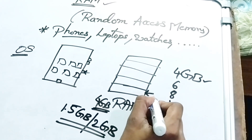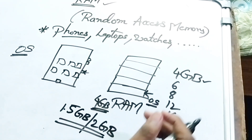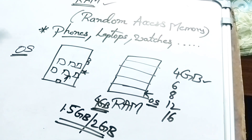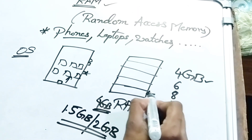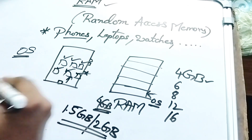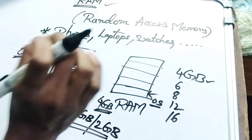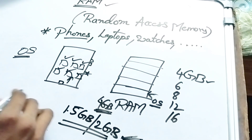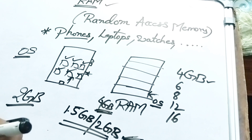When the phone starts, the operating system is automatically loaded and stored in RAM. When you power on the phone, the operating system loads. Applications like social media apps, Google, and other apps also use RAM. With 4GB RAM, after the OS loads, you have reduced available space.